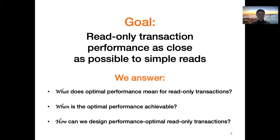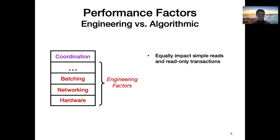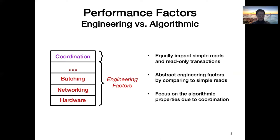To answer the first question, we look into the factors that influence the performance of read-only transactions. Factors like the type of hardware, network, and engineering techniques like batching are engineering factors. They equally impact simple reads and the read-only transactions built on top of them. We abstract away engineering factors because they do not help us identify the performance difference between read-only transactions and simple reads. Instead, we look into the algorithmic properties that capture the coordination incurred by read-only transactions. Since engineering factors are orthogonal to these algorithmic properties, our results can be applied to systems with different engineering factors. To identify these properties, we examined the coordination mechanisms used in existing systems.